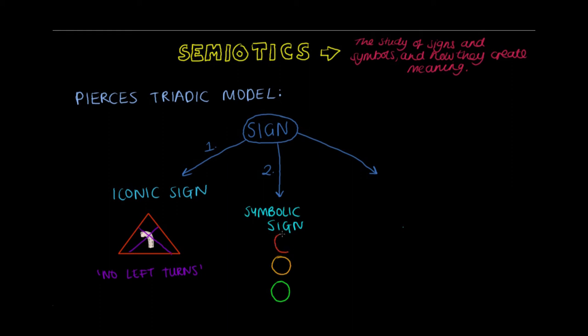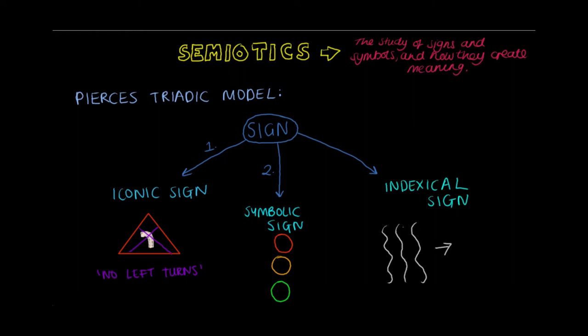A symbolic sign is when the relationship between the two is arbitrary, like the traffic light. An indexical sign is when the signifier is directly linked to the signified. Take for example smoke and fire — when we see smoke we automatically think that there's been a fire.